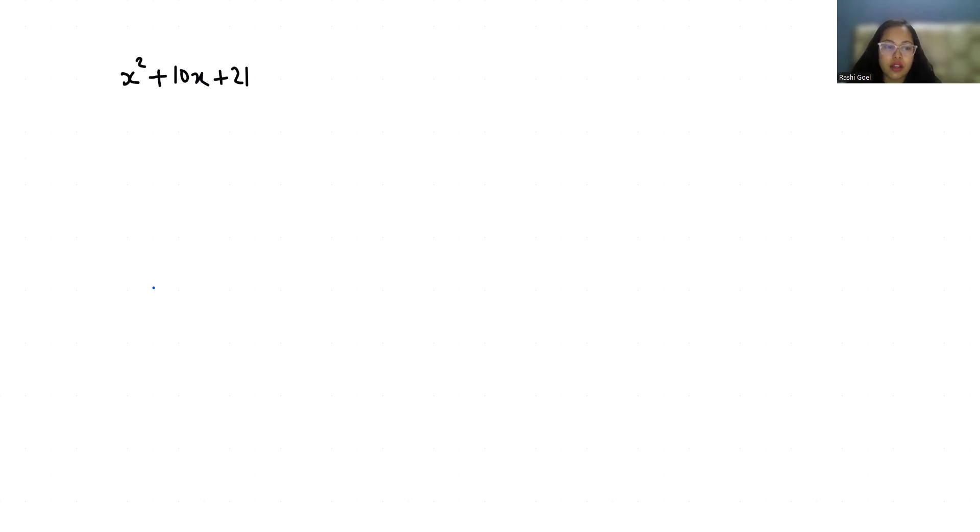So let's factor this. We can rewrite this 10x as 7x + 3x + 21. Now from the first two terms, if I take x as common, x + 7. Now if I take 3 as common, x + 7. Now x + 7 is common, so x + 3.